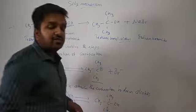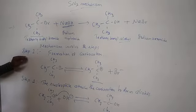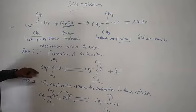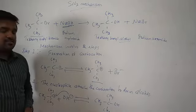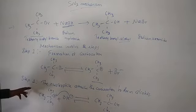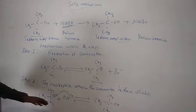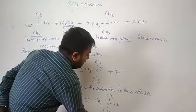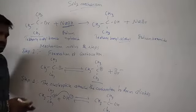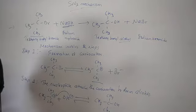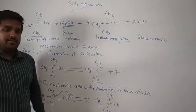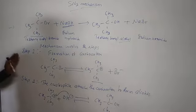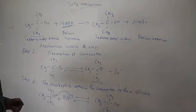To summarize: tertiary butyl bromide reacts with sodium hydroxide via nucleophilic substitution (SN1). This reaction takes place in two steps — step one is the formation of a carbocation by ionization, and step two is the nucleophile OH⁻ attacking the carbocation to form tertiary butyl alcohol. The product here is a racemic mixture, meaning it is a combination of two equal enantiomers — a concept covered in the first chapter of organic chemistry.